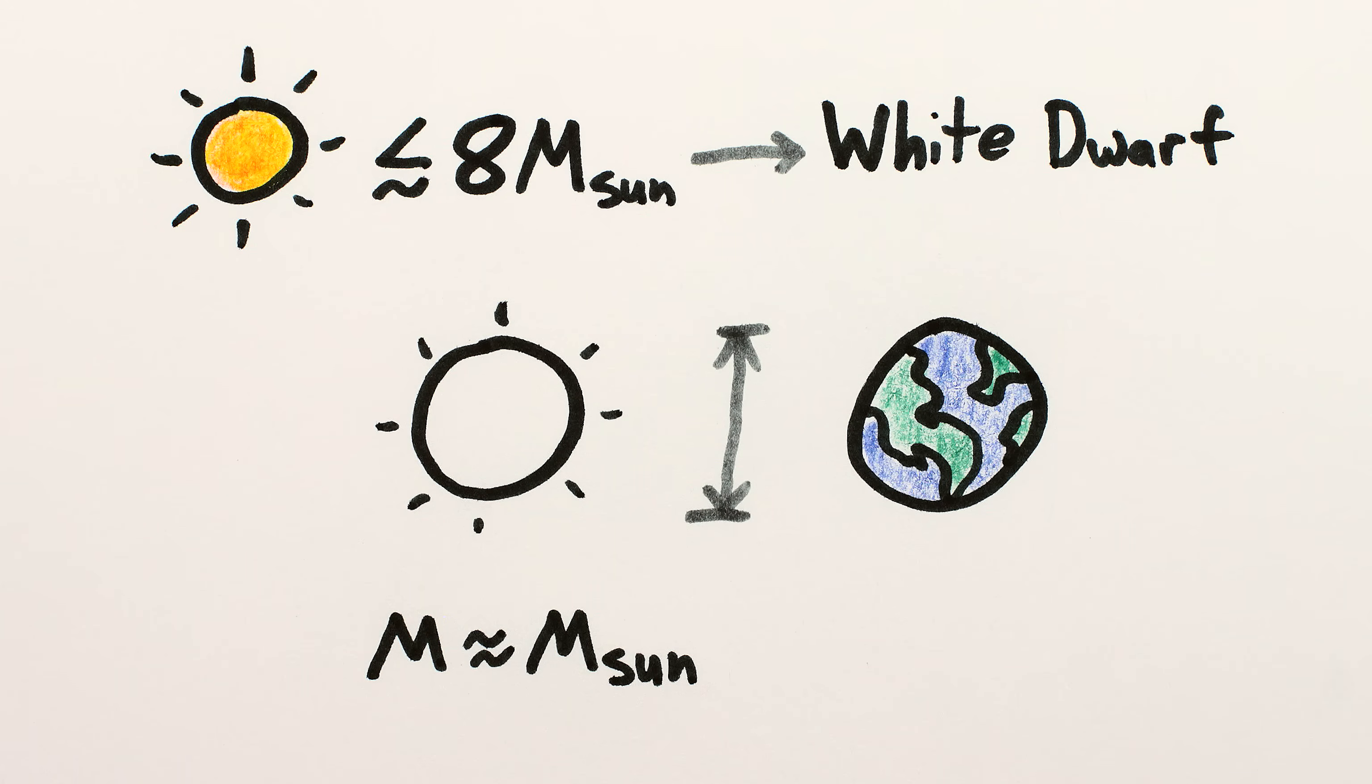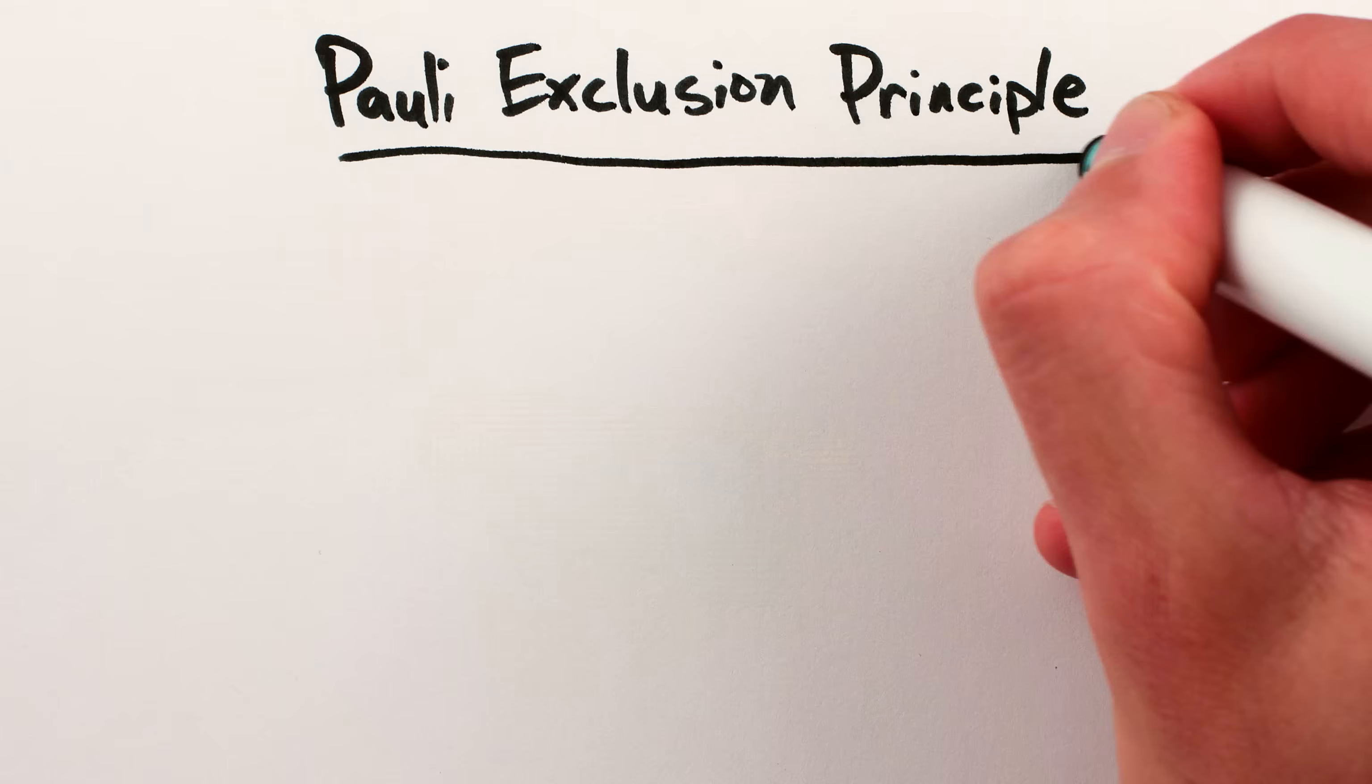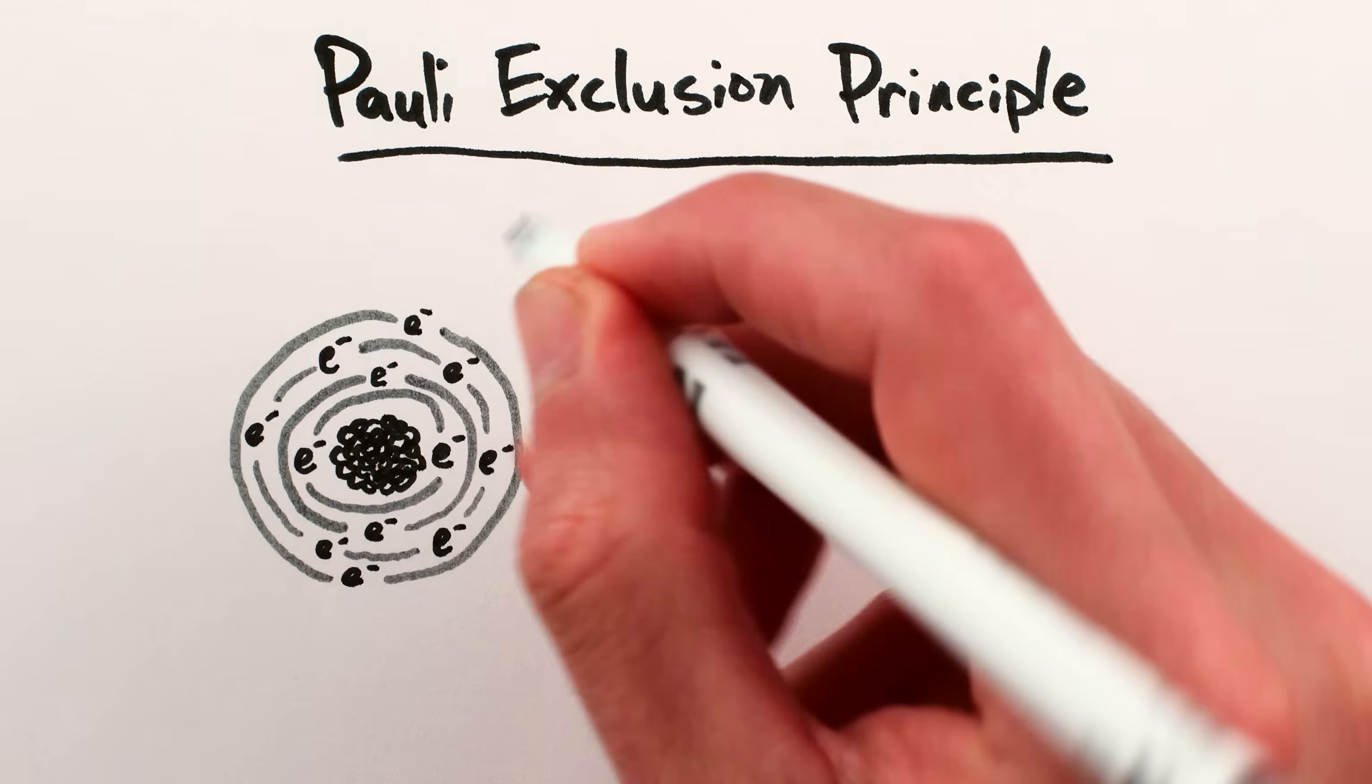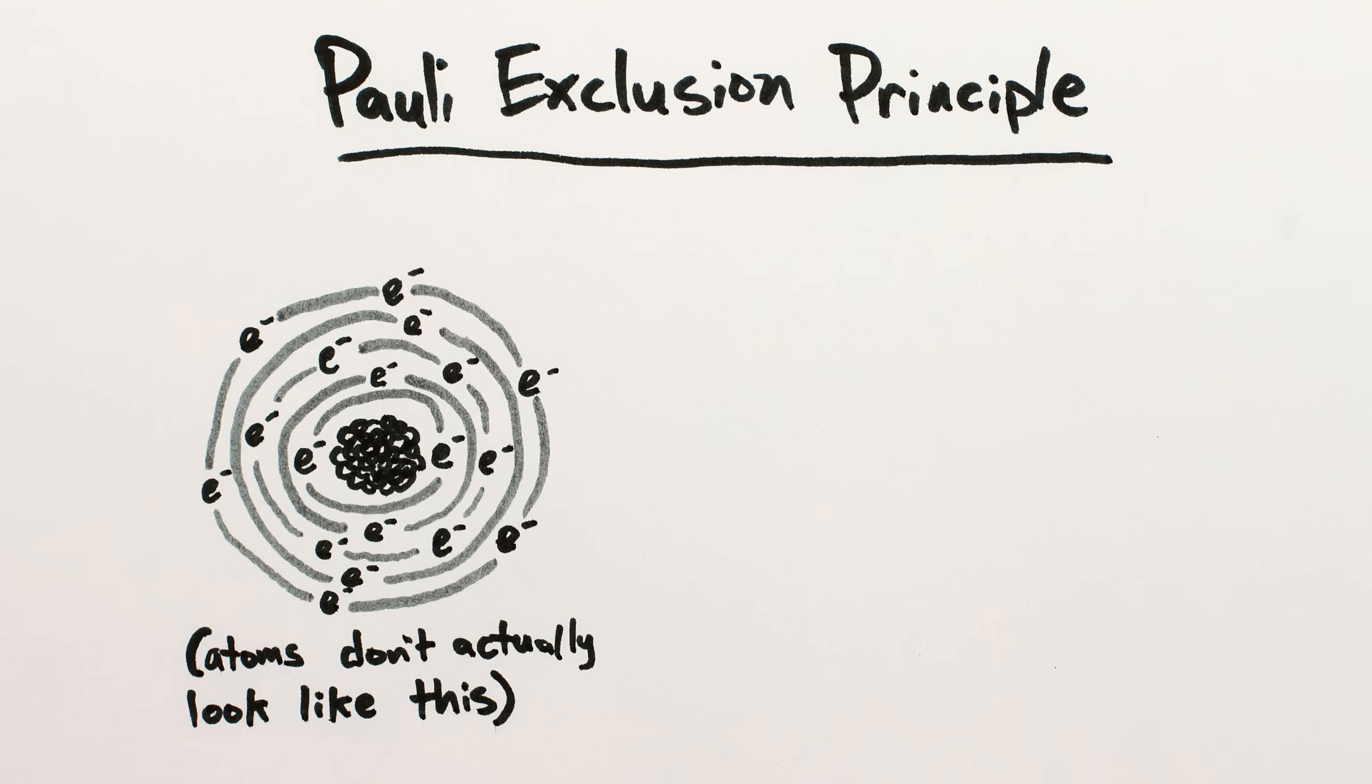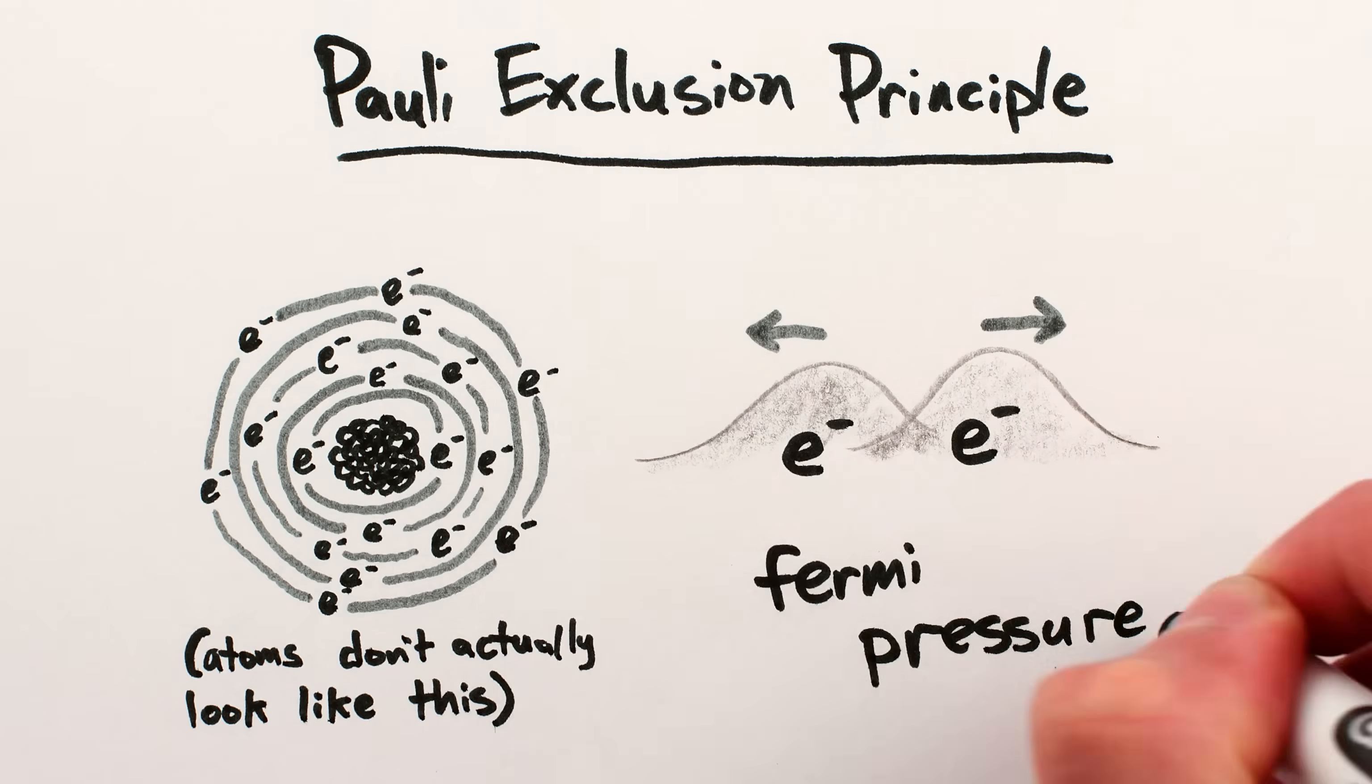It's held up against gravity not by heat, but by electrons repelling each other due to the Pauli exclusion principle. This effect is essentially a star-sized version of how electrons fill subsequently bigger orbitals around an atom, because of a fundamental law of the universe that no two electrons can share the exact same state.